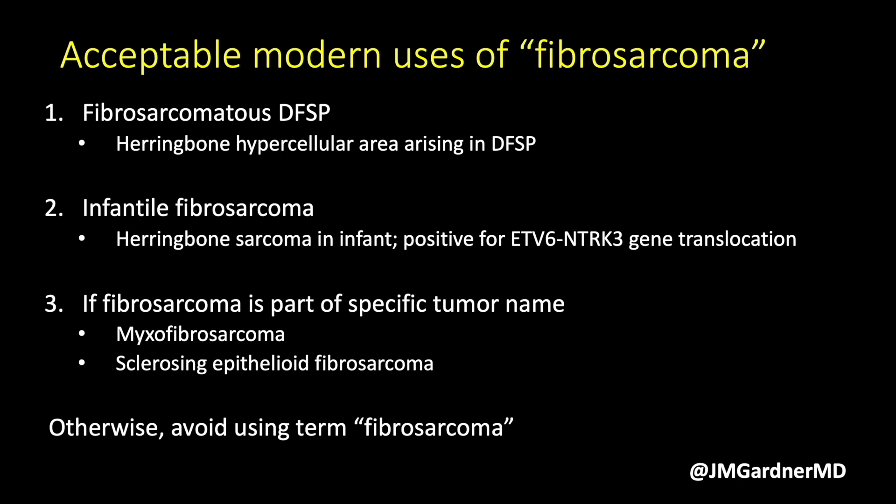In modern soft tissue pathology, there are times it's okay to call something fibrosarcoma. First, fibrosarcoma in DFSP — some people use the term 'fibrosarcoma arising in DFSP.' Second, infantile fibrosarcoma, which is a sarcoma with a herringbone cellular pattern occurring in infants. It is a translocation sarcoma with a gene fusion of ETV6-NTRK3 — a molecularly defined tumor in babies that is quite rare but has a very good prognosis, so it's important to diagnose correctly.